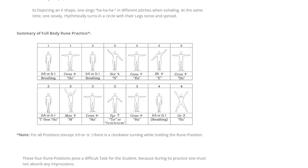Part three: start in the east rune position, you can do I or Ha, then you do the Man rune position with both arms up — Mmm — then the cross, then the Tyr rune position — Ta Te Ti To Tu — then the cross, and stop again. Part four: after the eastern position, do an X with arms wide and feet wide apart, and do Ha while walking in a small circle keeping the arms wide. For all positions there is clockwise turning while holding the rune position.